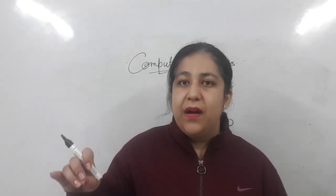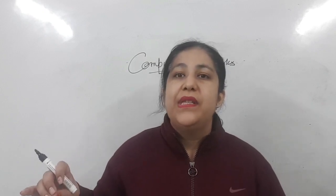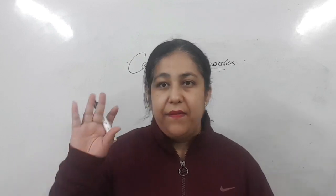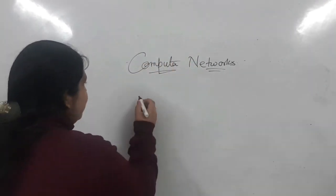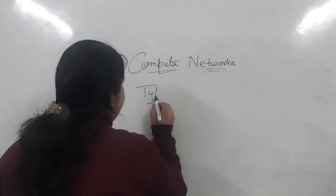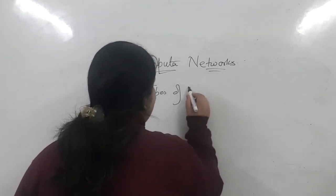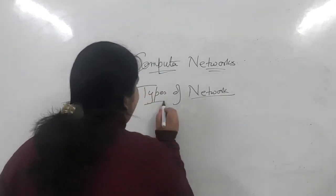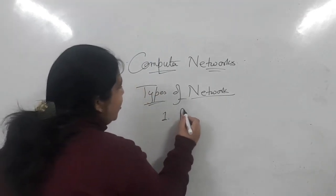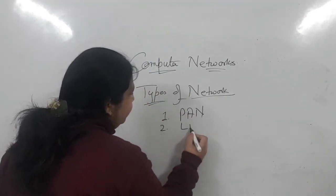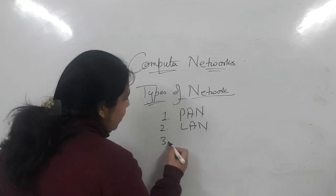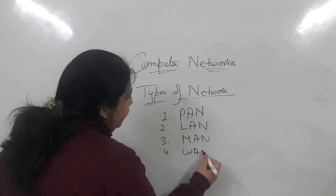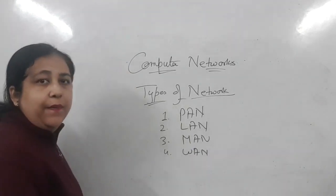How much area is covered to establish a network decides the type of network. We have four types of networks based on that, which are asked in case study questions. If you are asked to identify what kind of network is being made, you pick from these four categories: PAN, LAN, MAN, and WAN. Do you all know the full forms? Please write them down in the comments — I will not tell you; you write the full forms.